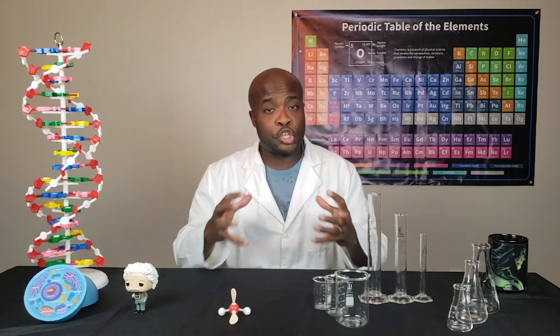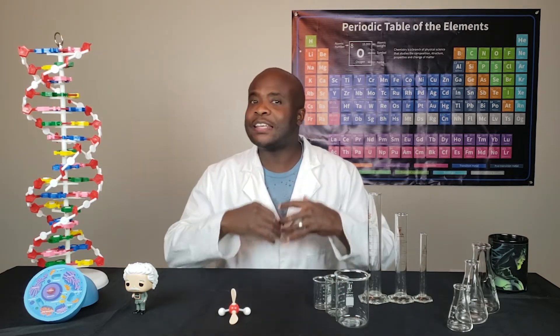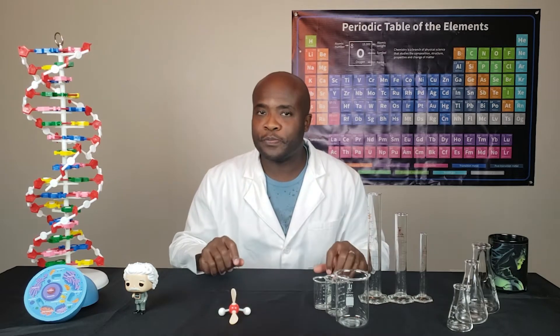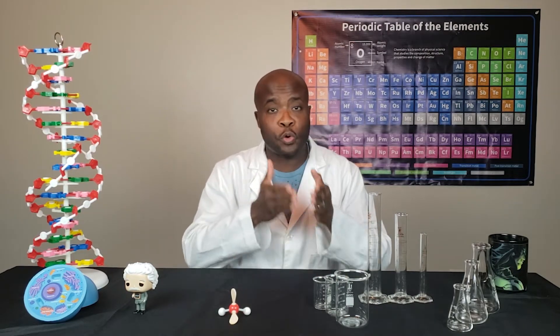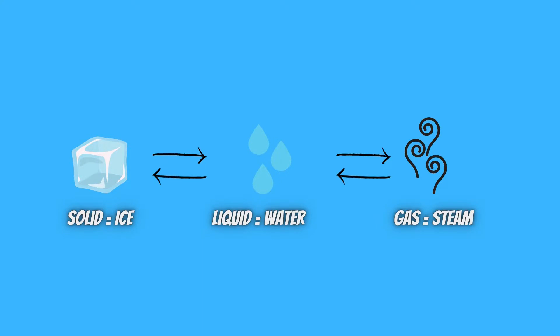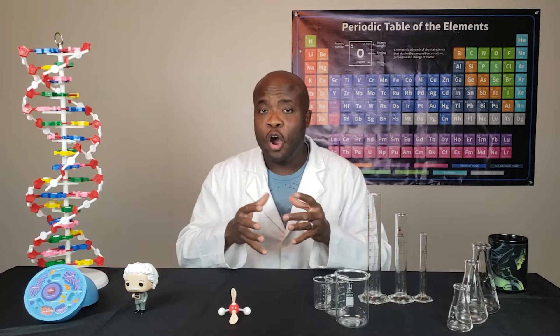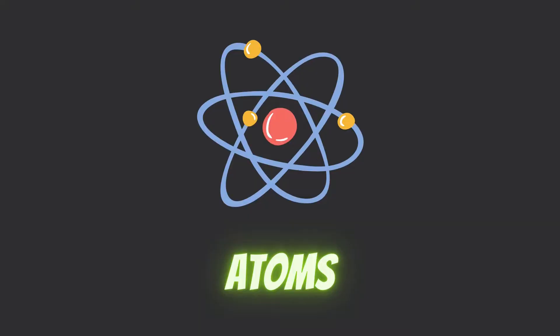A great example I can use to break down all three is water. Water is the only substance that we can see go through each state. Water in its solid form is ice, water in its liquid form is water, and water in its gas form is steam. In each of these states — solids, liquids, and gases — are made up of atoms.